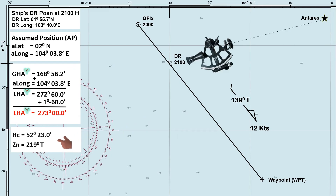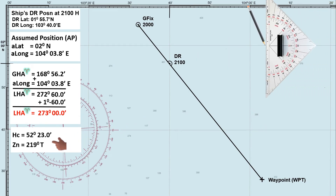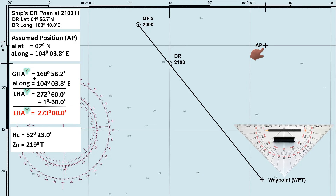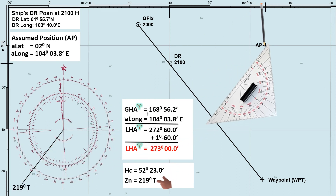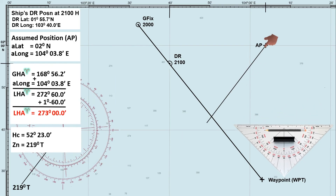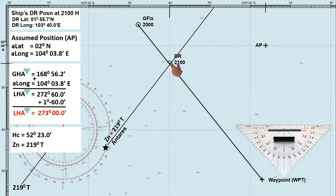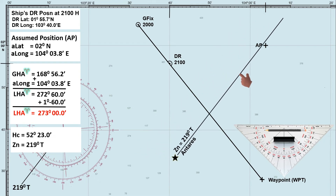Let's go back to the chart and plot our assumed position. Our assumed latitude is 2 degrees north, and the assumed longitude is 104 degrees 3.8 minutes east — here is our assumed position. Lay down the bearing of the star Antares, which is 219 degrees true, at the assumed position. If you are using a different method to find the true azimuth, especially one that uses the DR position, then the bearing should be laid down at the DR position. Assumed position has no use when using different methods.